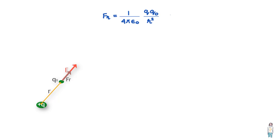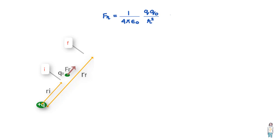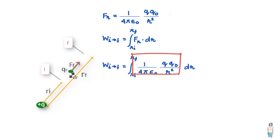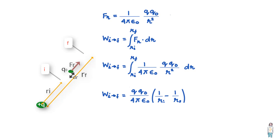We move Q naught from an initial point I to a final point F. Say the force at this point is F_R and the force moves the test charge through a distance dr. Then the work done is the force at this point times displacement dr, and we integrate it from R_I to R_F. Substituting the value of F_R and integrating gives us this expression.